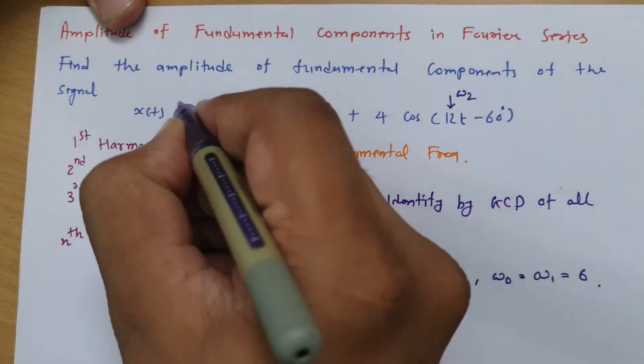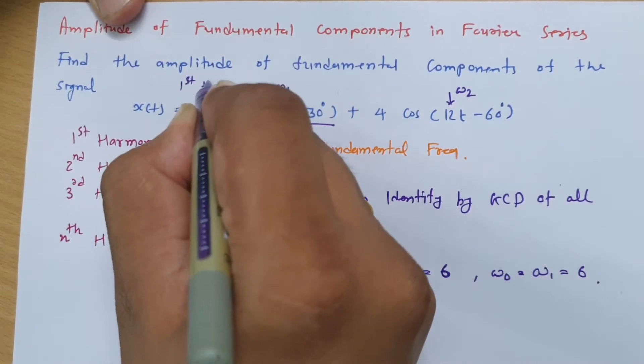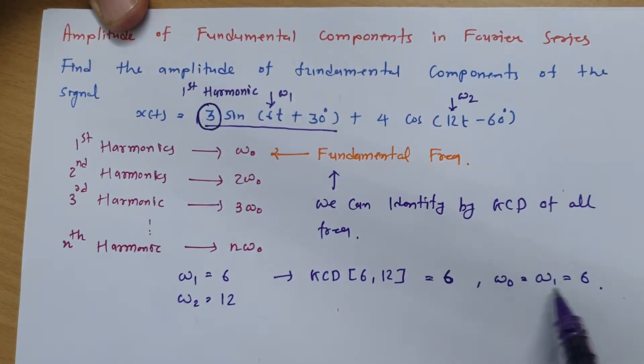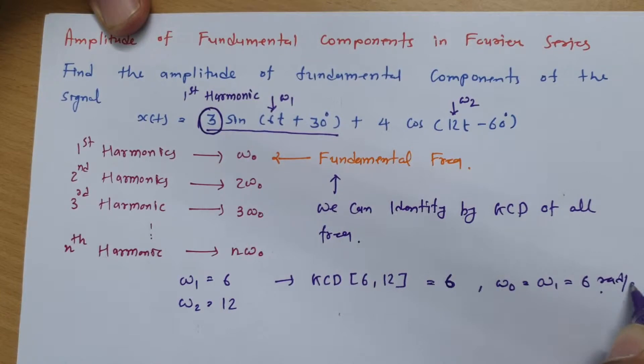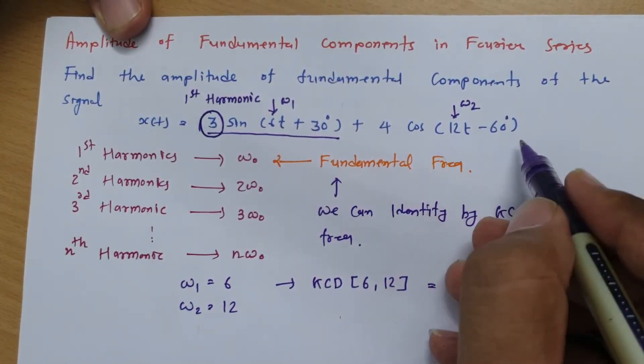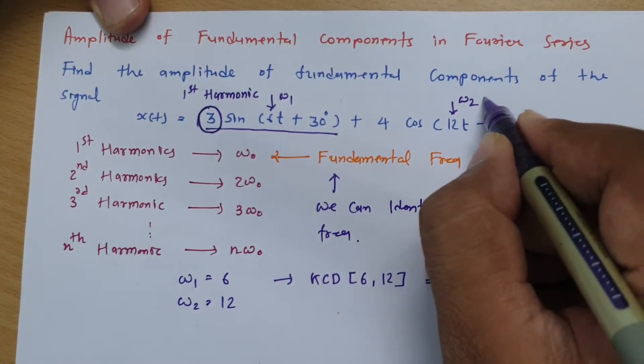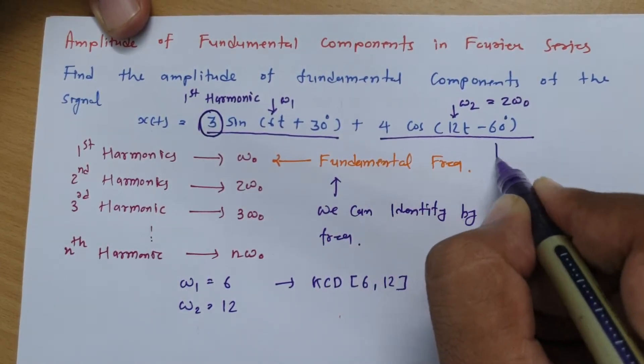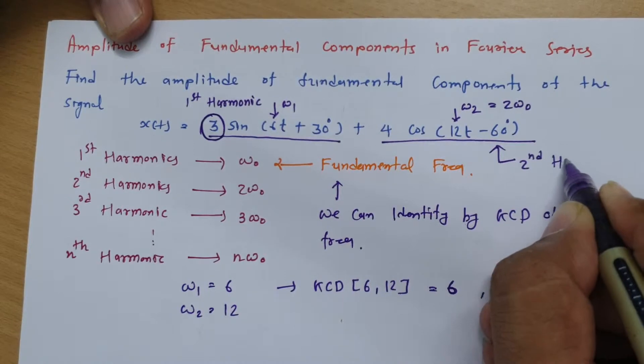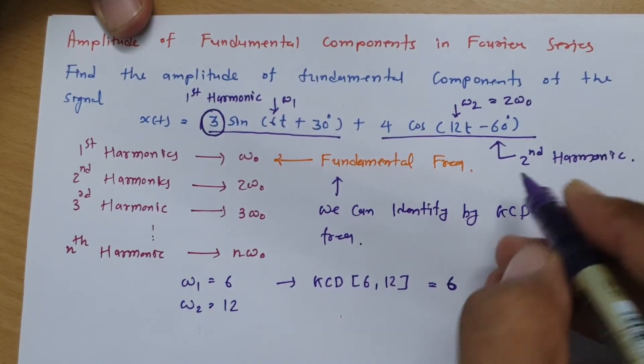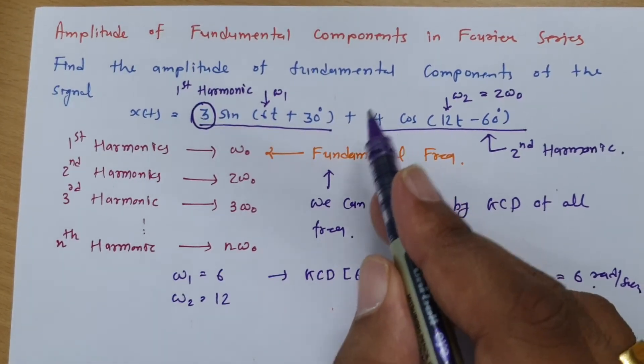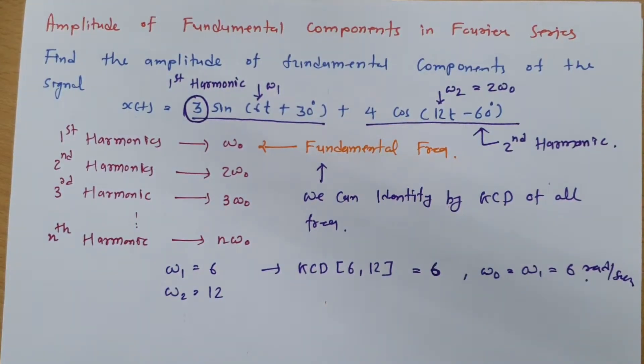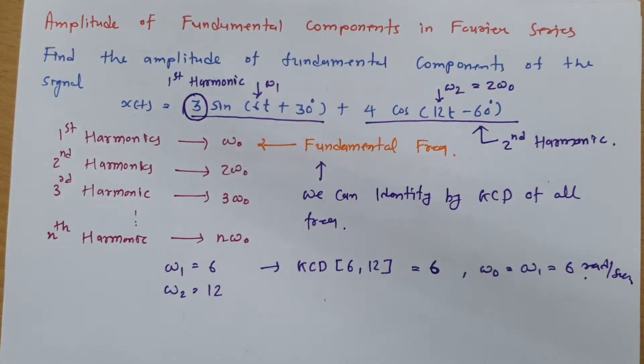And one can say this is even first harmonic. So first harmonic that is happening at 6 radians per second. So obviously here 12 has been there. So omega_2 definitely that has to be 2 omega_0. So one can say this is what second harmonic. And amplitude of second harmonic is 4. So that is how we can identify which harmonic is there. And what is the amplitude of different harmonic.